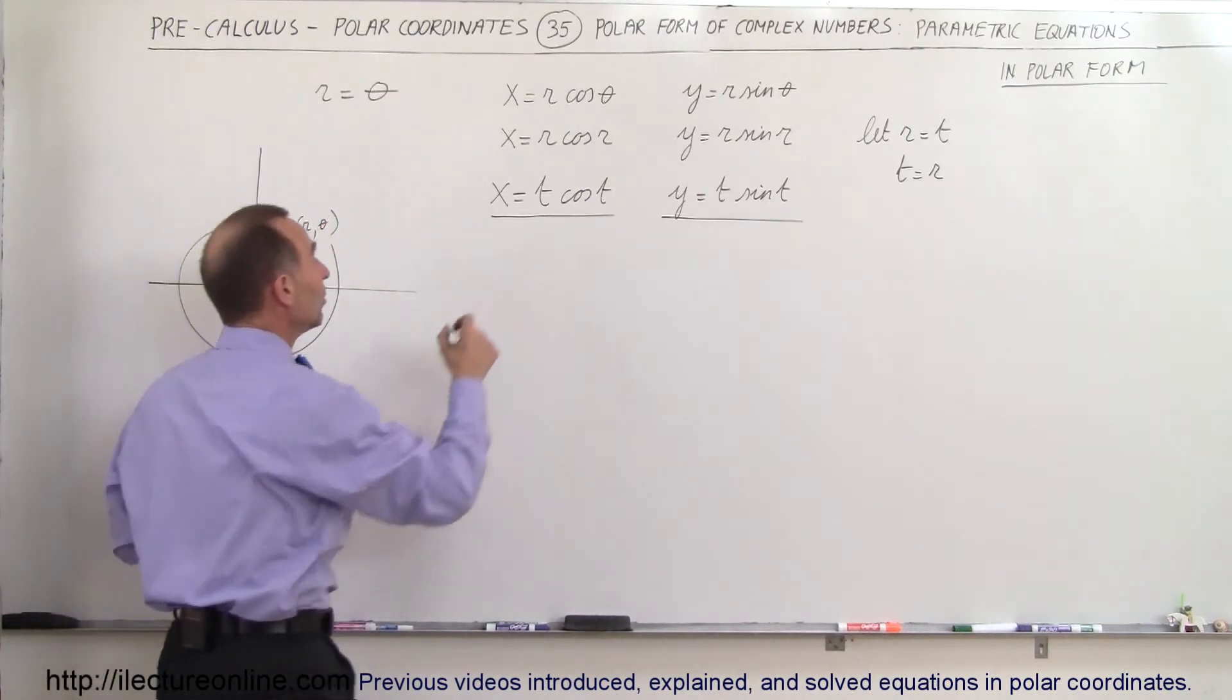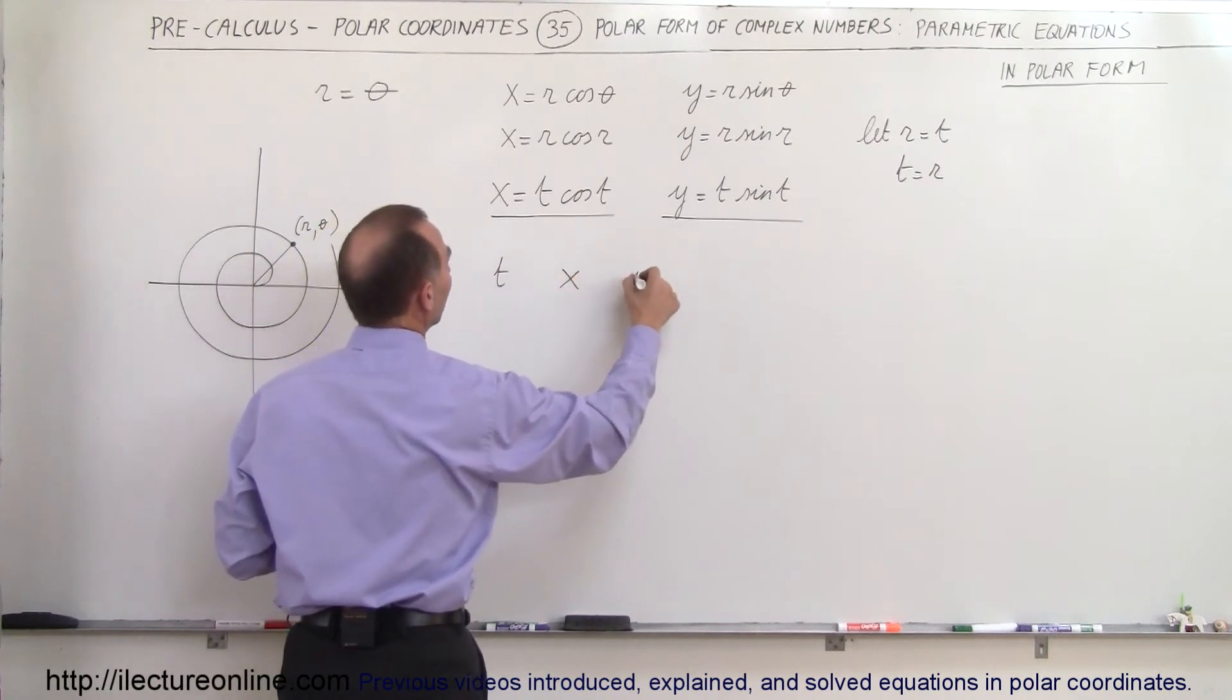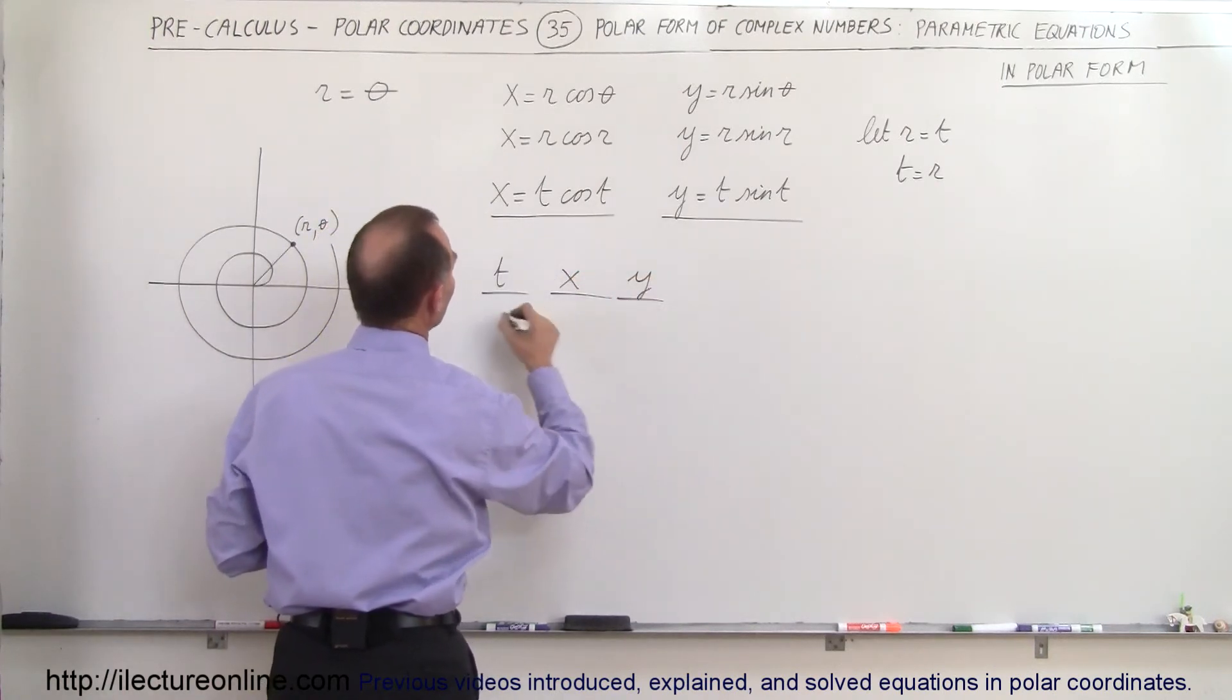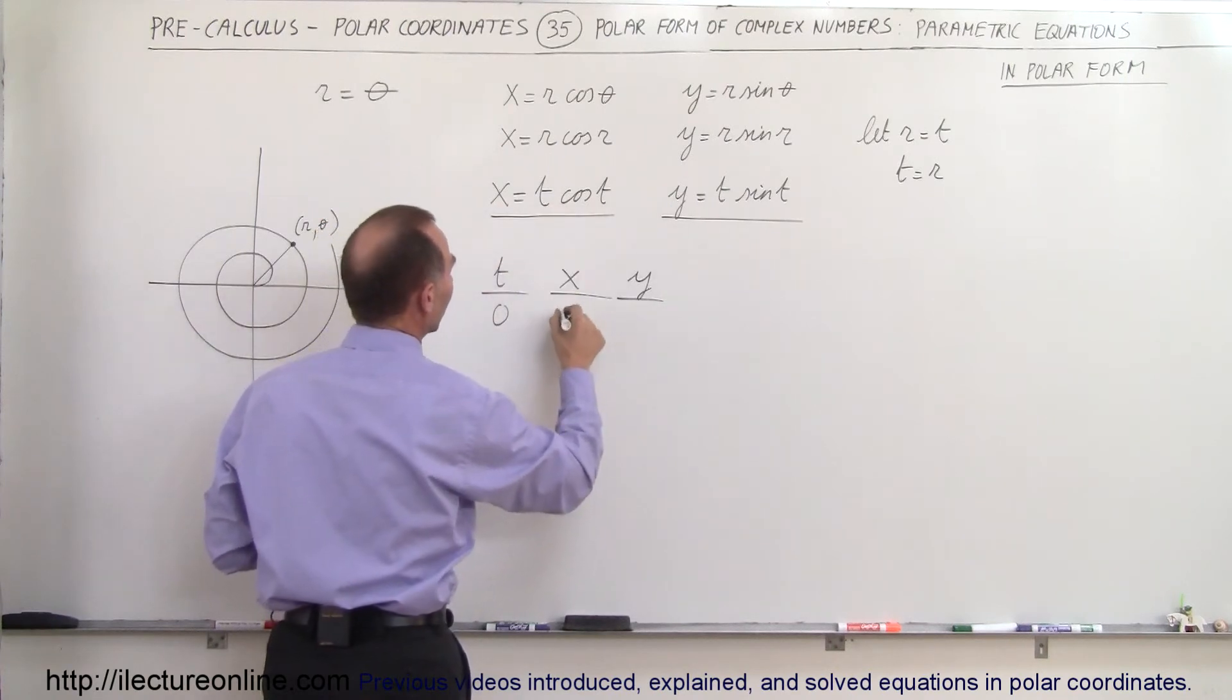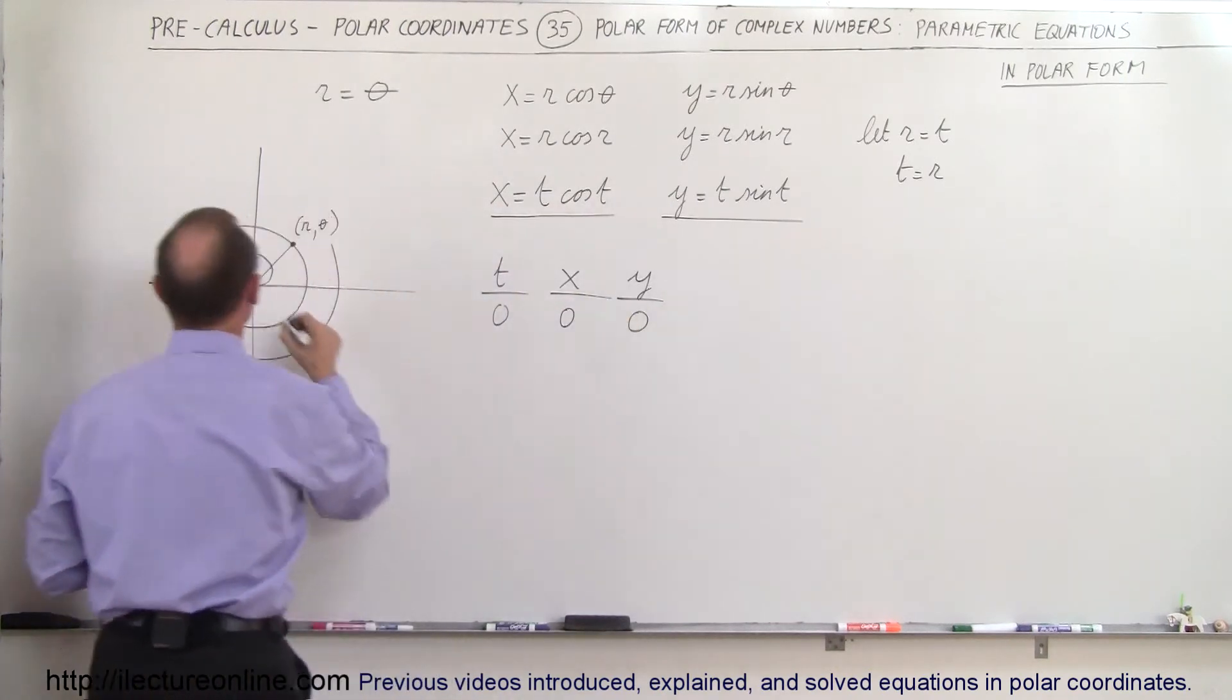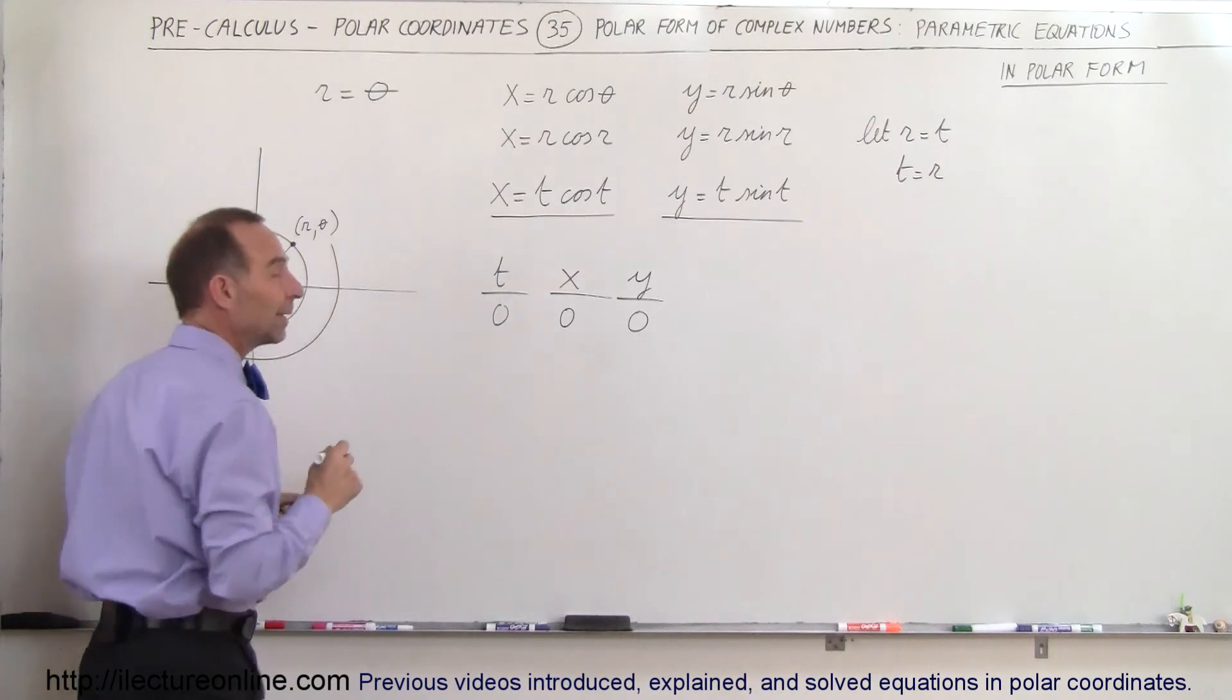For example, if t is equal to zero, so we can have t, we can have x, we can have y. So let's say that t is equal to zero, if t is equal to zero, then of course x is equal to zero. And y is equal to zero, that means it starts over here at the beginning, at the origin, when time is equal to zero.